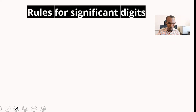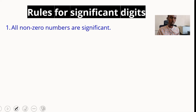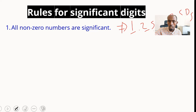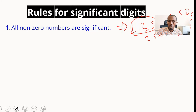There are different rules governing the number of significant digits. The first rule is that all non-zero numbers are significant. For example, 1.25 has three significant digits, and 2, 5, 6, 4 has four significant digits — all non-zero digits are significant.